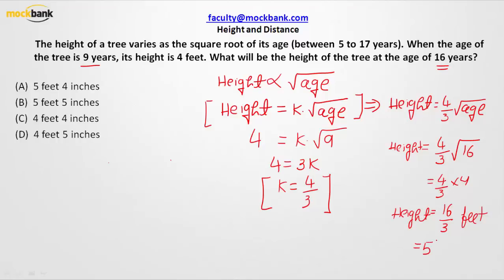16 over 3 feet. Since the height is given in the form of feet and inches, can I say that this is going to be about 5 and 1 over 3 feet? 1 foot is how many inches? 1 foot is 12 inches, and hence 1 over 3 feet will be 4 inches. You will divide both sides by 3.